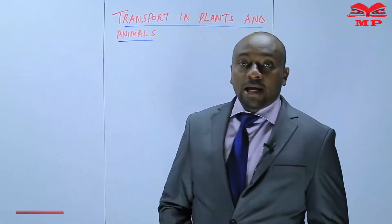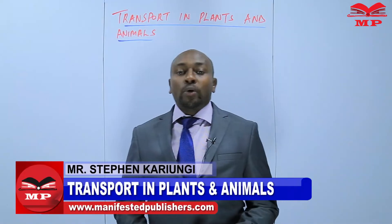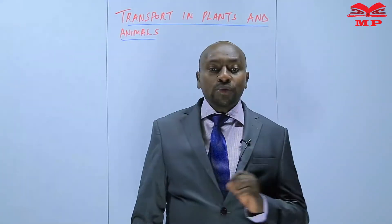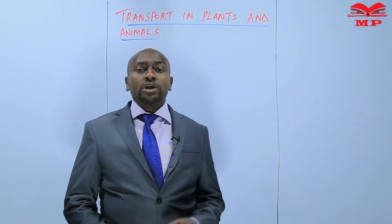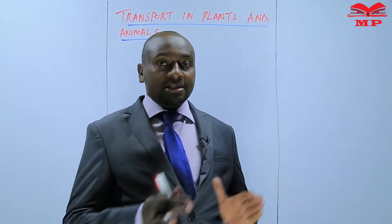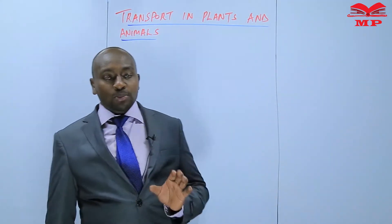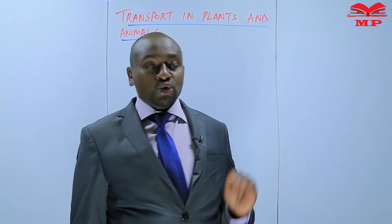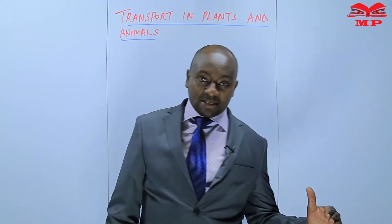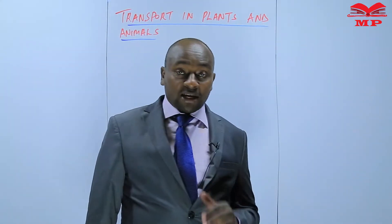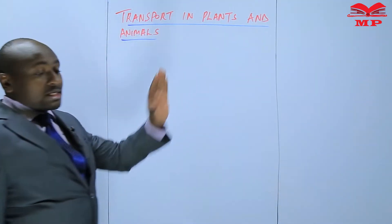Welcome to Manifested Publishers. Hello learners, my name is Stephen Kariongi. Welcome to our today's biology lesson. Today we are discussing transport in plants and animals. During our previous lesson, we introduced the chapter objectives — what a learner is expected to know as far as transport in plants and animals is concerned. We also discussed the first objective: the meaning and necessity of a transport system. Today I want us to look specifically at transport in plants.